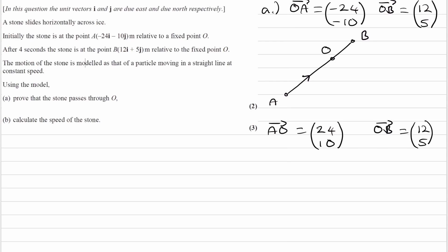If you look at these two vectors, we can see that AO is two lots of OB. If you times this by two, you end up with (24, 10).